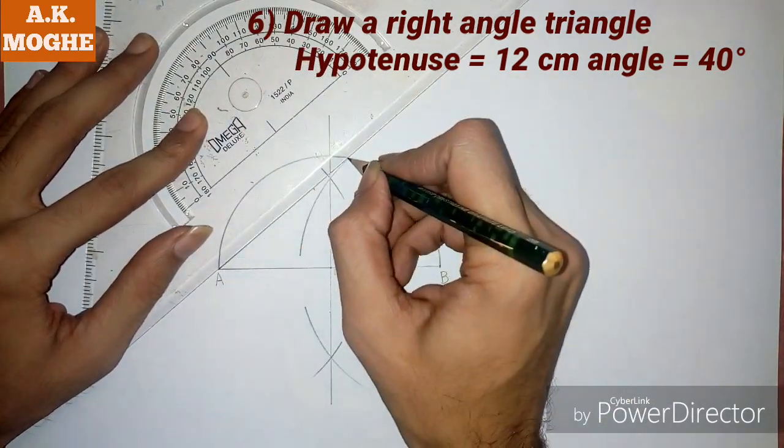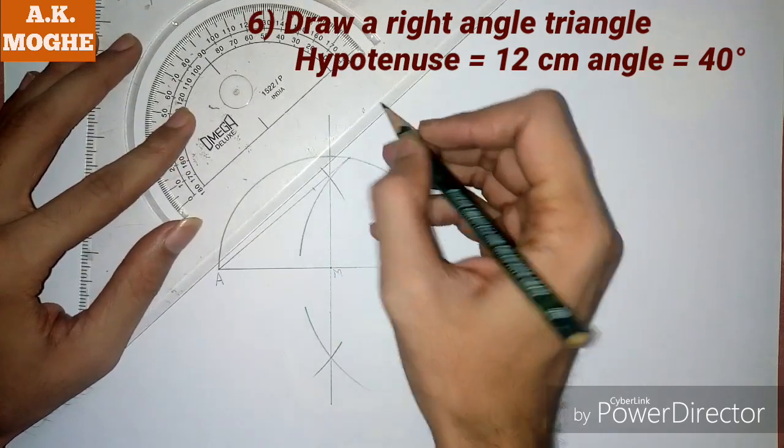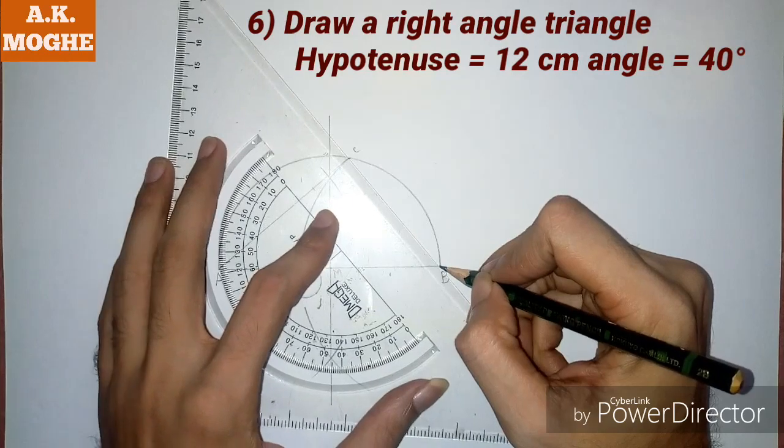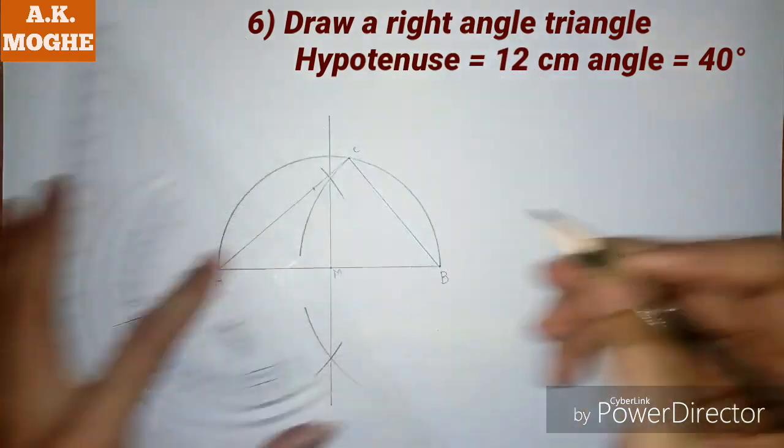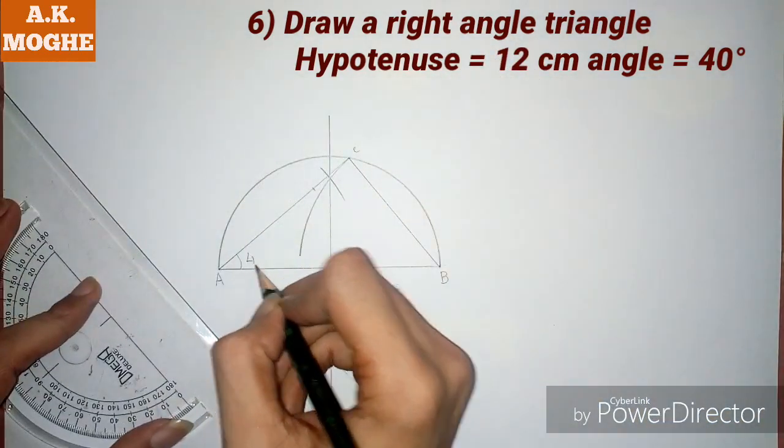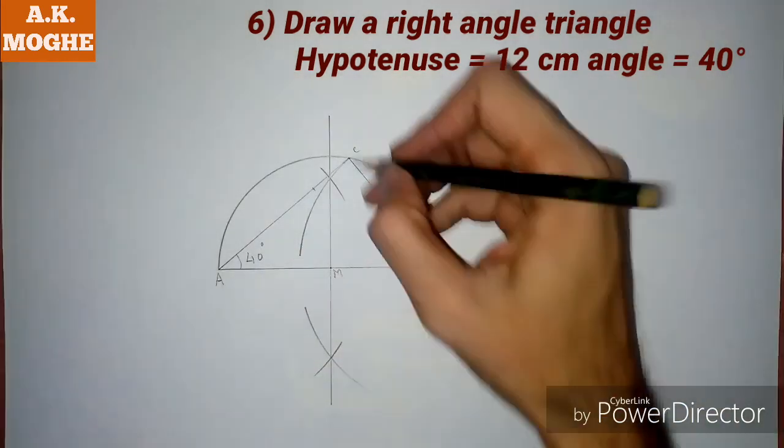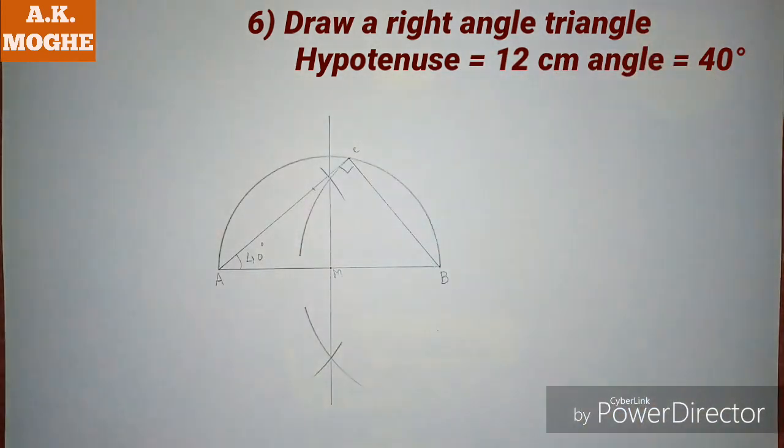And extend its point up to the semicircle as point C, and join points B and C. So the right angle triangle is ready with hypotenuse equal to 12 centimeters and angle equal to 40 degrees.